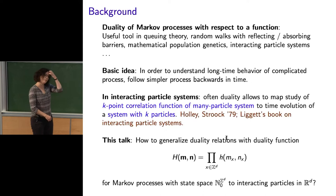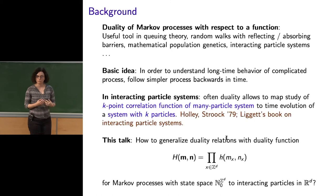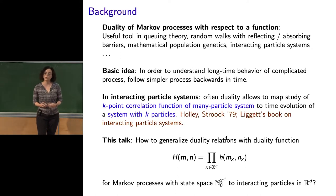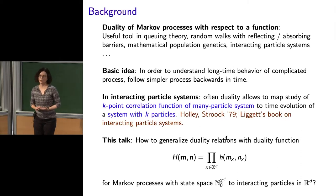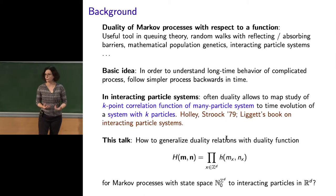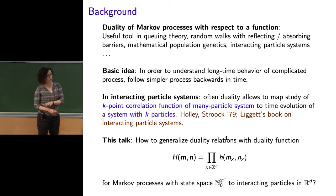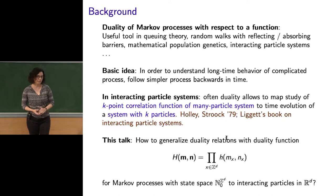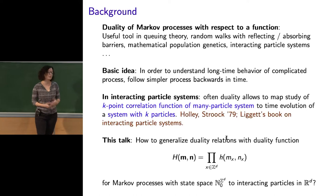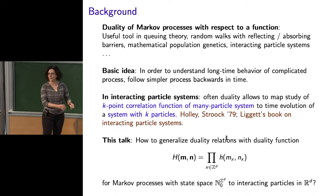The basic idea when you want to apply duality is that in order to understand some complicated system, typically consisting of many particles, you try to use a good duality function to follow instead a simpler system backwards in time. In interacting particle systems, some of the dualities allow you to map the study of a k-point correlation function of a many-particle system — or even infinitely many particles — to something much easier, which is follow two particles instead.